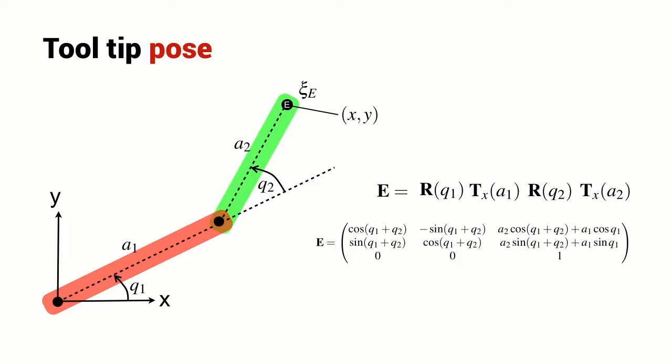If I expand this out, multiply all the transformations together, I get the expression shown here, a 3 by 3 homogeneous transformation matrix representing the pose of the robot's end effector.